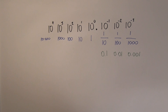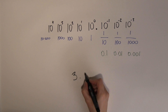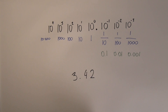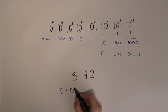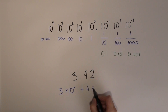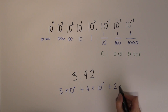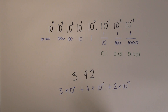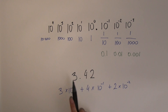Why is this useful? When we talk about decimal numbers like 3.42, that basically means three times ten to the zero, plus four times ten to the minus one, plus two times ten to the minus two. So the place values are built into the system.